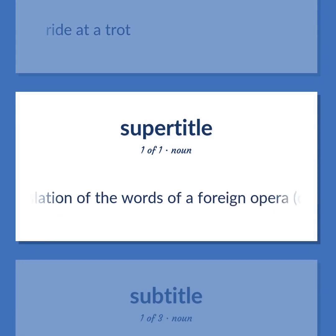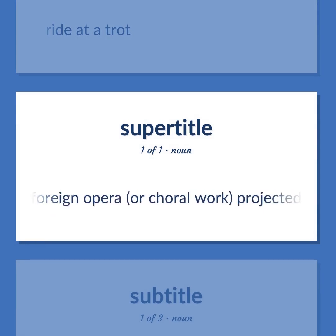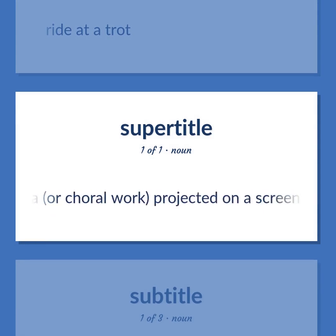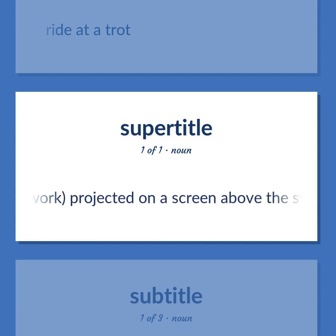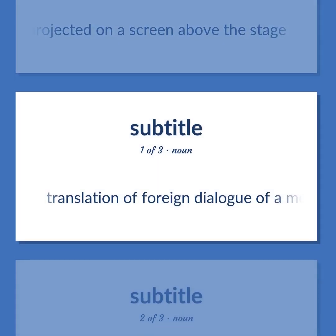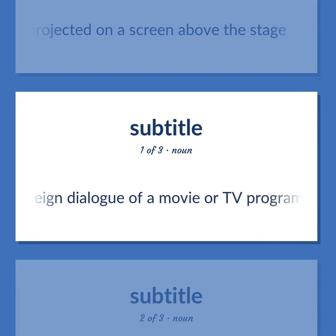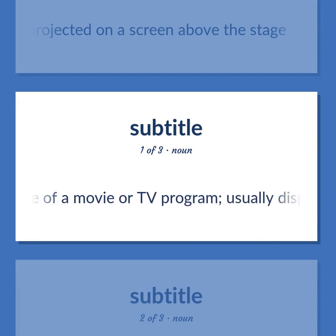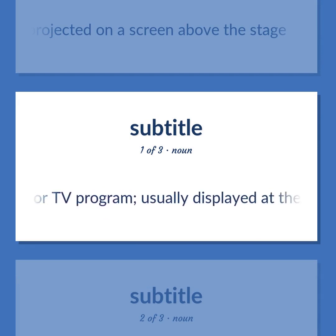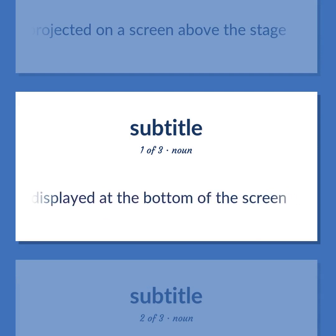Surtitle: Translation of the words of a foreign opera or choral work, projected on a screen above the stage. Subtitle: Translation of foreign dialogue of a movie or TV program, usually displayed at the bottom of the screen.